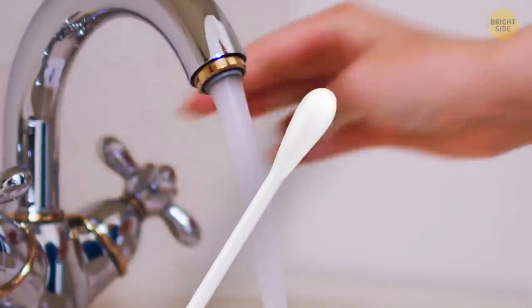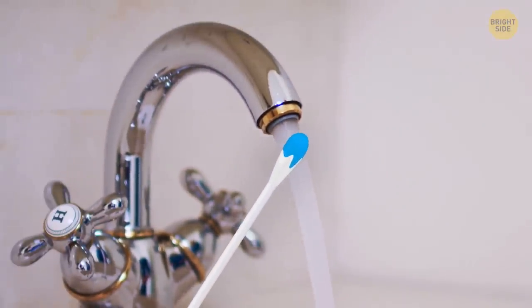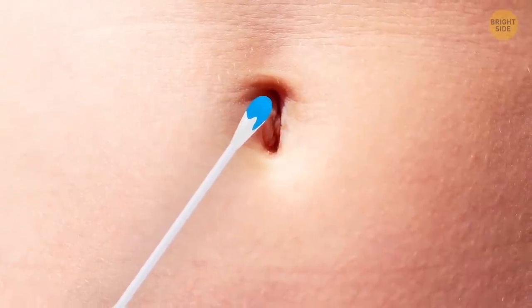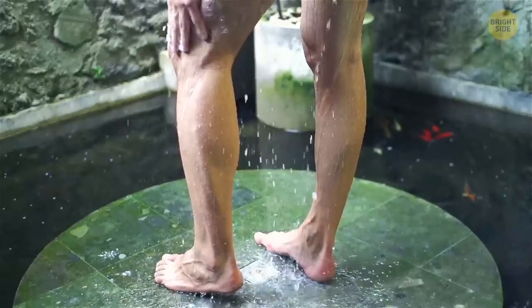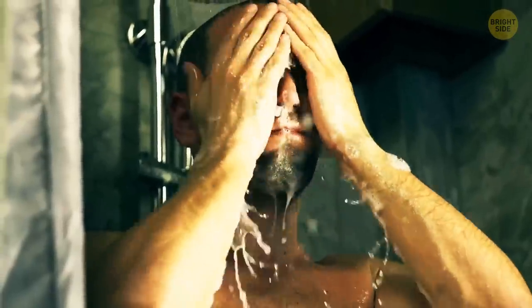After that, take yet another cotton swab, wet it under the tap, and gently rub your navel again to get rid of rubbing alcohol. It might dry your skin otherwise. Finally, take a long shower, and don't forget to dry your belly button with the corner of your towel.